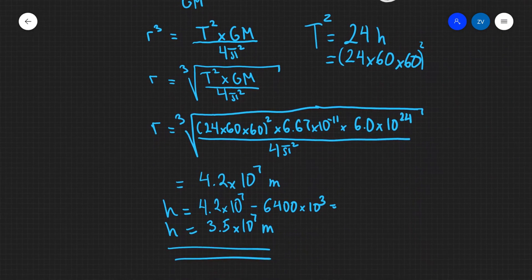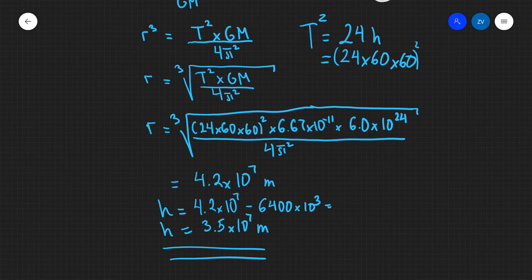And this is the height at which a geostationary satellite needs to be placed. And we've calculated that using Kepler's third law. Okay folks, so hopefully geostationary orbits now make sense. If there are any questions, please feel free to drop a comment and please consider subscribing. Thank you very much.